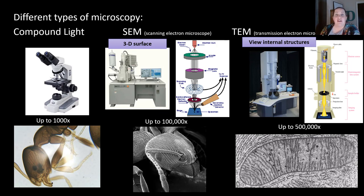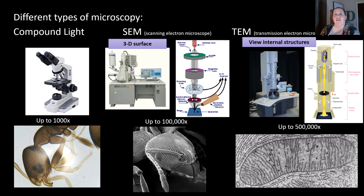SEMs are scanning electron microscopes. These are much larger microscopes and they allow you to see 3D surfaces, like you can see here of this ant. They magnify a hundred thousand times bigger. The microscope that can actually magnify the most is a transmission electron microscope. These allow us to look at internal structures of cells, like organelles such as chloroplasts or mitochondria — things we'll talk about later. They can magnify up to 500,000 times the normal size of a structure.